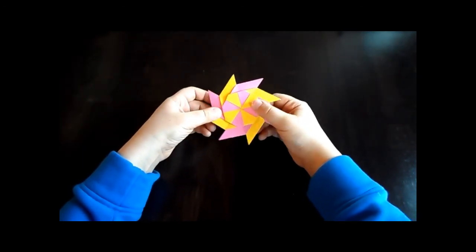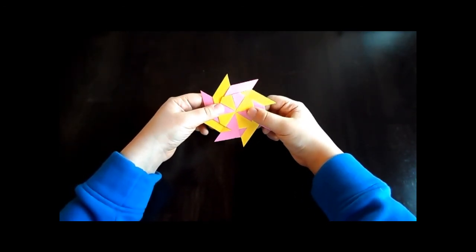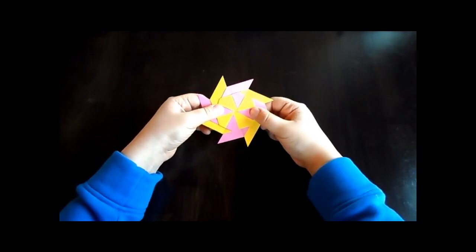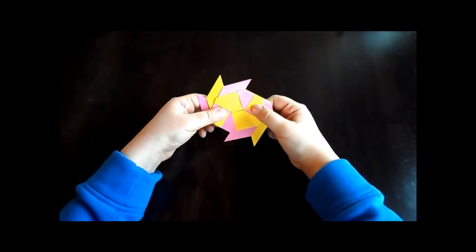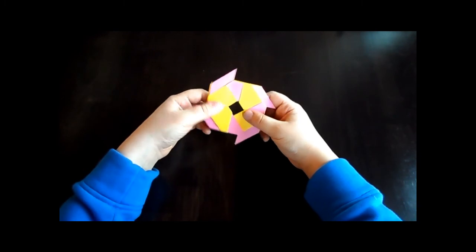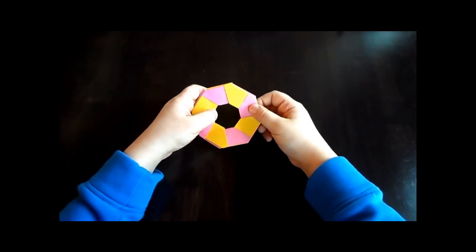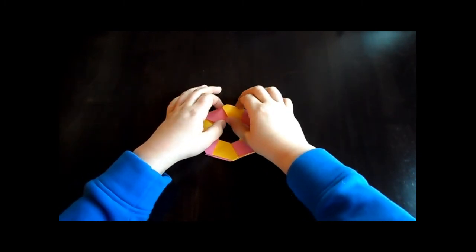All right, so there you go. Here's your ninja star. And to put it back to that kind of frisbee thing, you're just going to do the same thing and pull it apart. And there you go. It's a really cool thing. This has been we love lattes, and I'll see you next time.